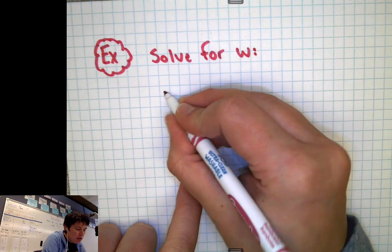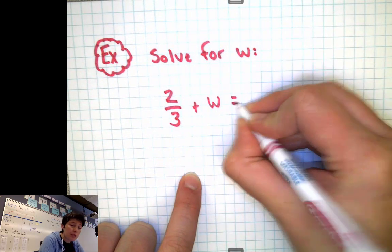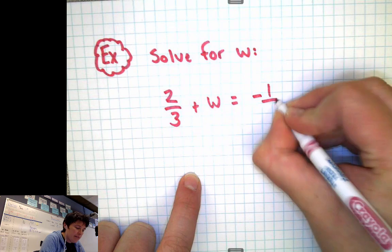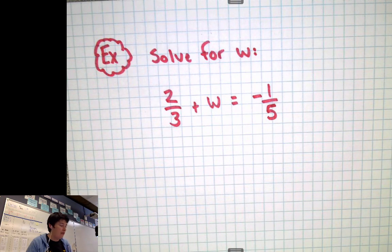This time we are going to solve for w. And here's the problem. We have 2/3rds plus w equals negative 1/5th. 2/3rds plus w, whatever w is, equals negative 1/5th.